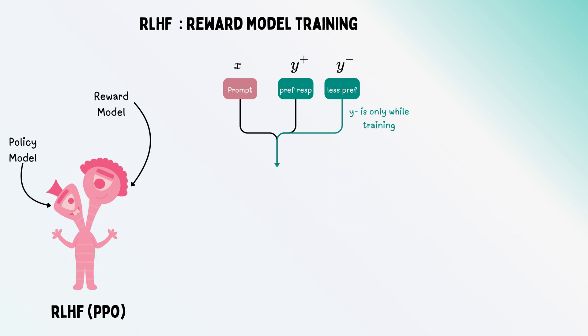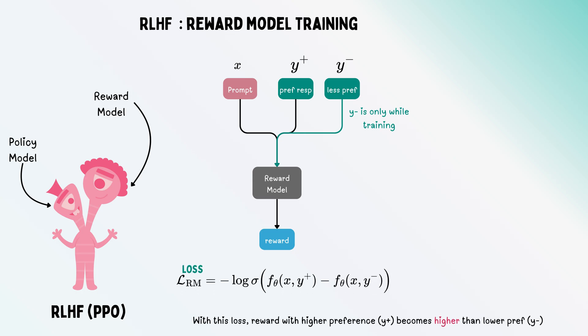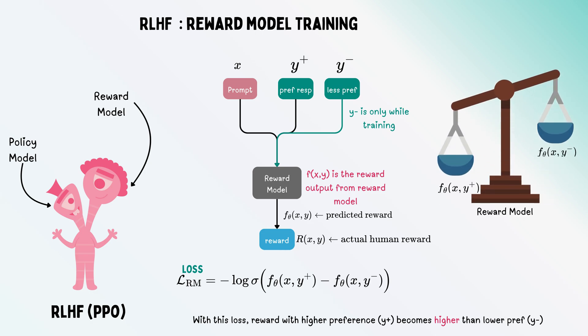You make it a generalized model so that for unknown prompts, just like humans have certain preferences, it learns these preferences by giving rewards to responses that are more likely to be preferred than less preferred ones.